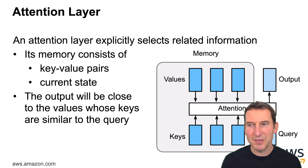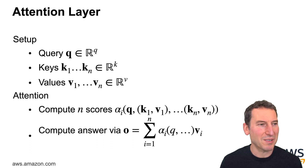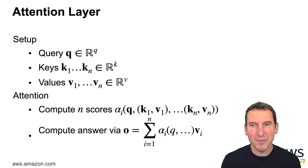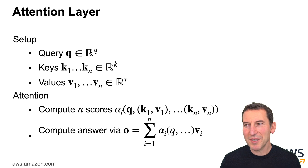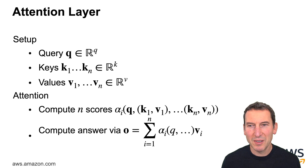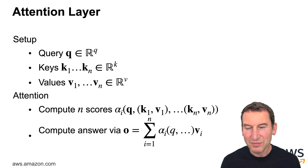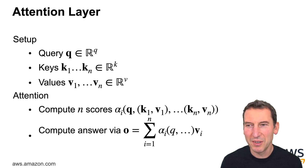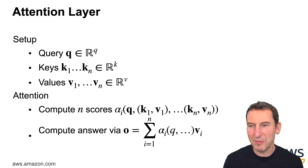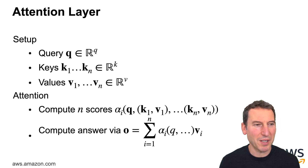This sounds super abstract, so let's look at what it looks like in detail. I have some query, some keys, and some values — they can all live in different spaces. I have some function alpha such that alpha_i gives me the scores associated with the query q and the corresponding keys. Then I get an answer as a weighted combination of the values v_i times alpha_i of the query, considering this particular key and all the other keys.